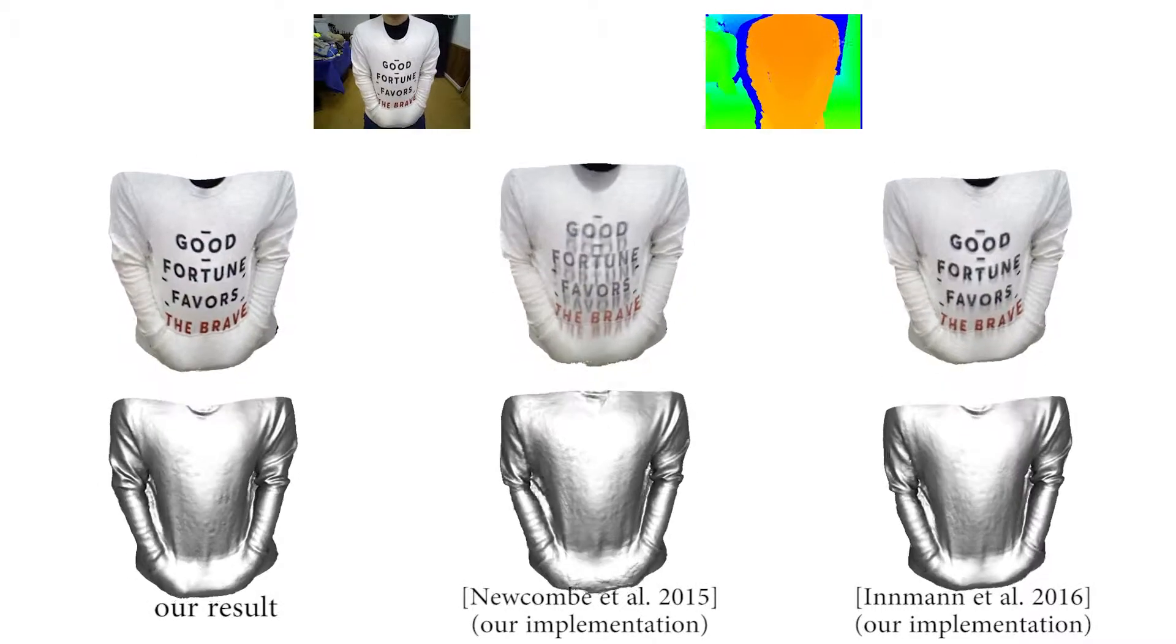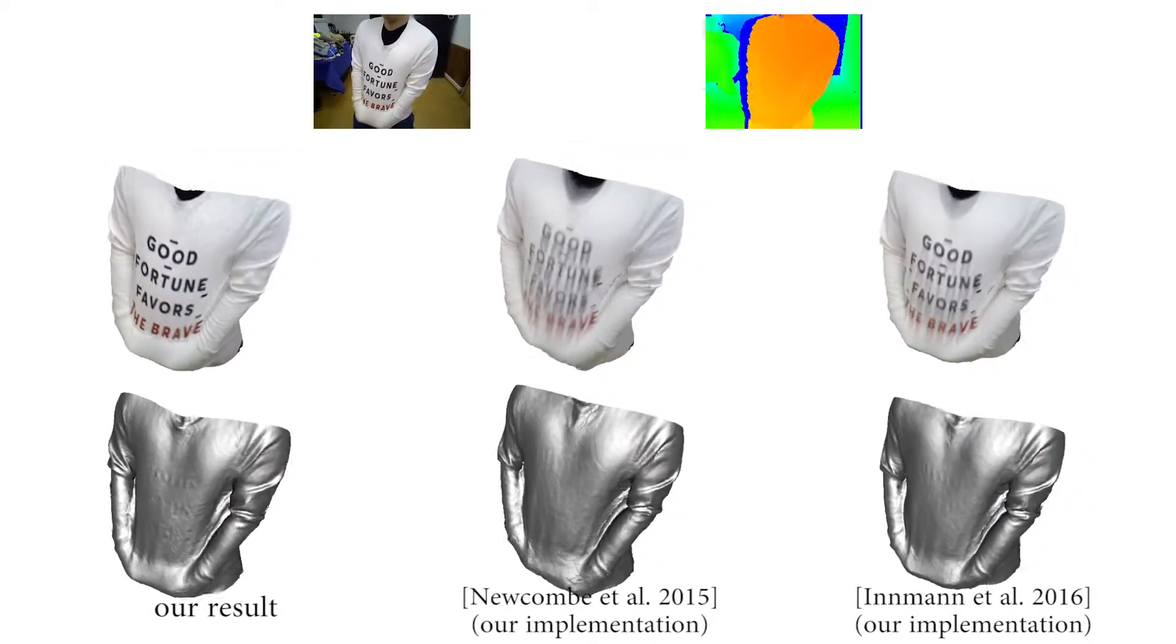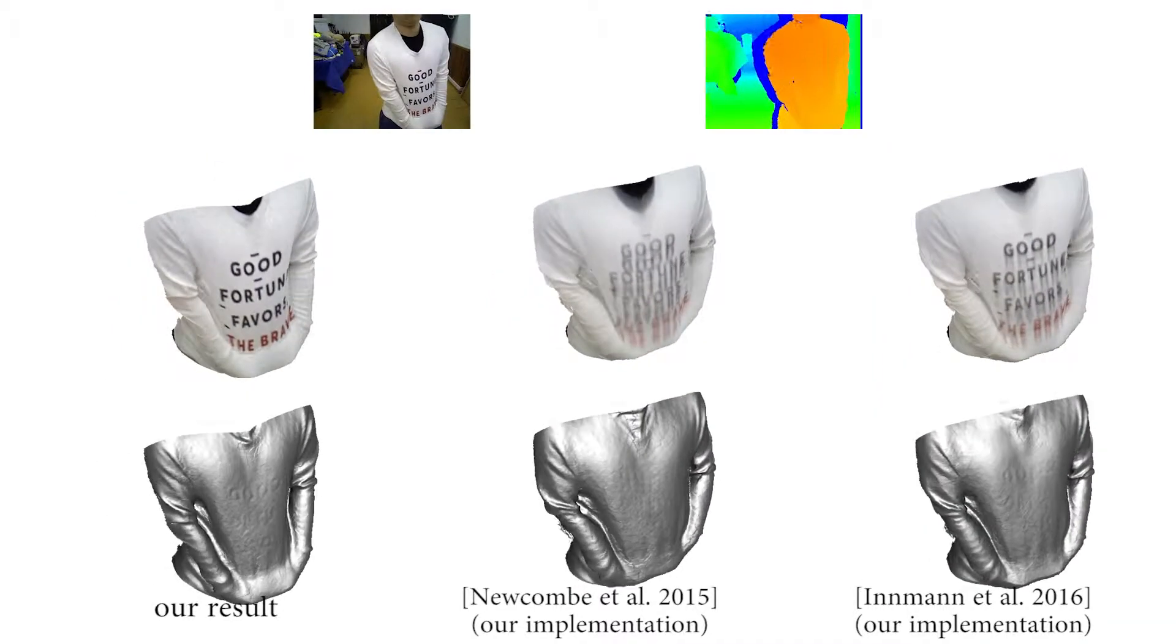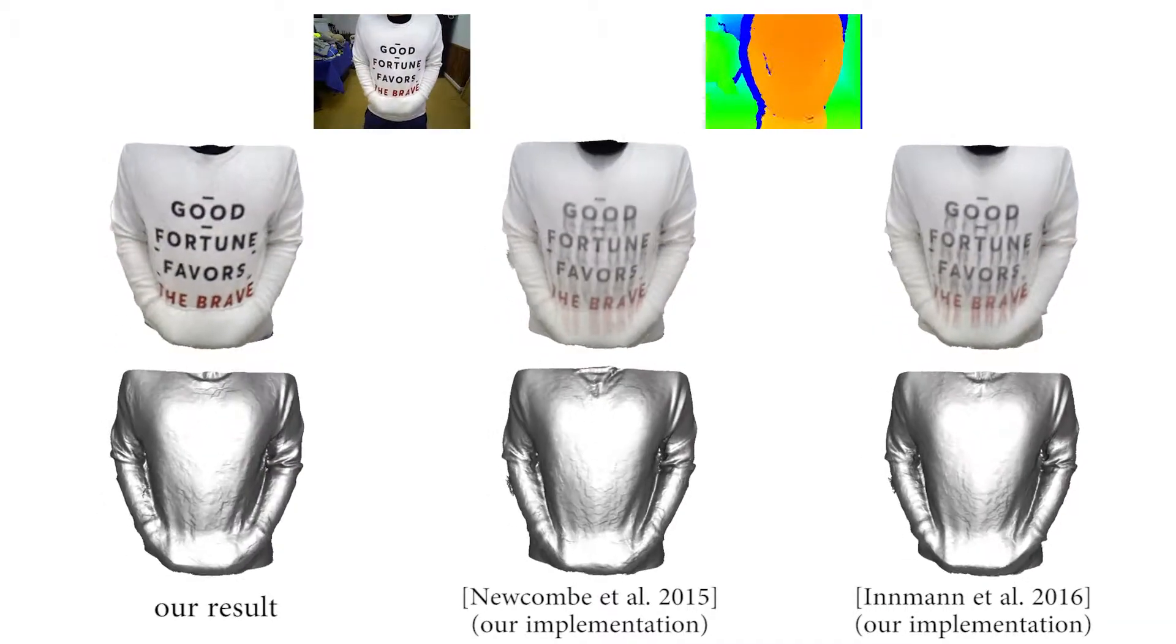In this sequence, cloth is stretched by a performer. Again, the other two methods fail in tracking the stretching motion, thus generating severely blurred textures.